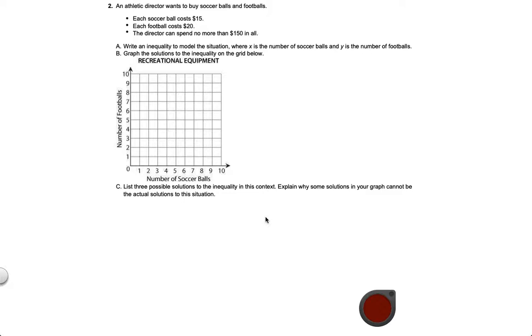So let's just break this down. An athletic director wants to buy soccer balls and footballs. You may not like either sport but you still want to buy the balls for some reason. Each soccer ball costs $15, each football costs $20 and the director can spend no more than $150.